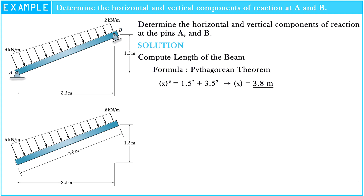Looking at the figure of the problem, we see that the loads applied on the beam are irregular loads. In this case, we would like to convert those loads to point loads. We divide those loads and see that there are rectangular shape loads and right triangle shape loads.